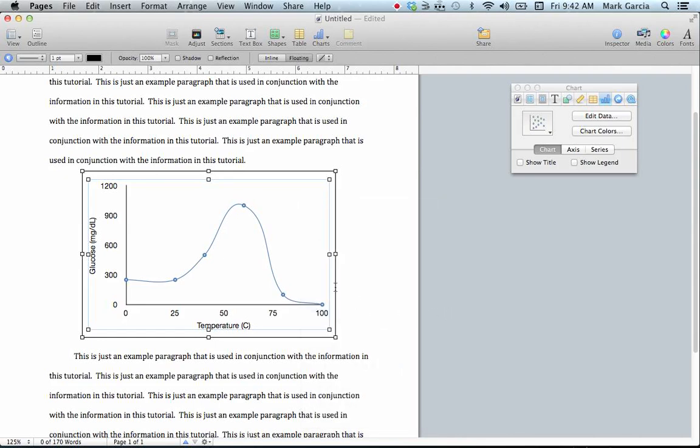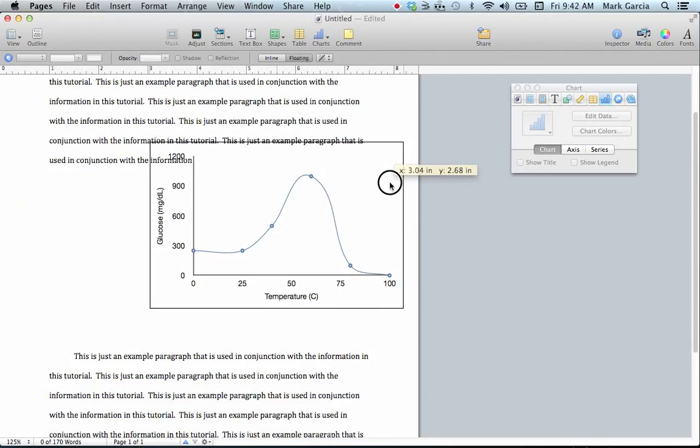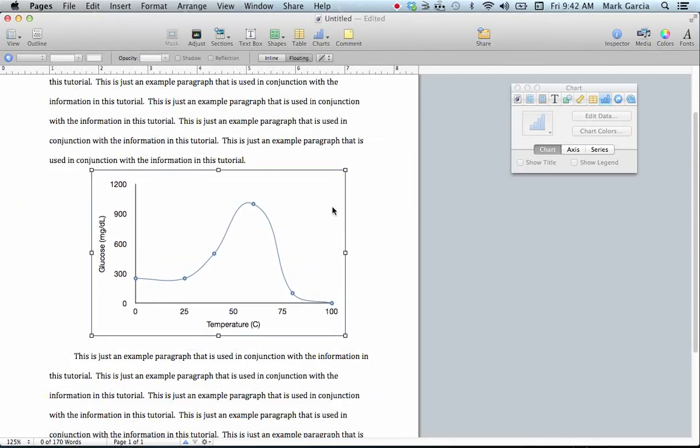And if you press Command, Option, and G, you will group the objects together. So I'm going to undo that real quick. So I press and hold Command, Option, and G. And notice how both of the objects are now grouped together. So now when I move it, I've got a graph surrounded by this nice border grouped together.